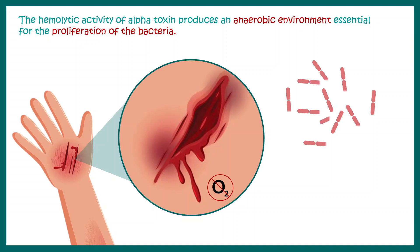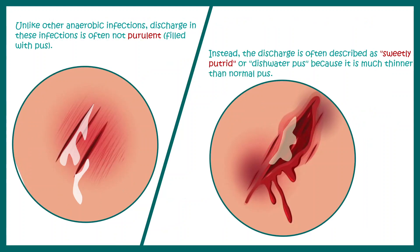In an anaerobic environment, Clostridium perfringens can grow really rapidly, making it an optimal situation for its growth. One important factor that discriminates these infection sites from others is the type of discharge. Unlike other anaerobic infections where the discharge is pus-filled or purulent, in this case the discharge is sweetly putrid — meaning it is clear and thinner because it leads to a lot of death of neutrophils.